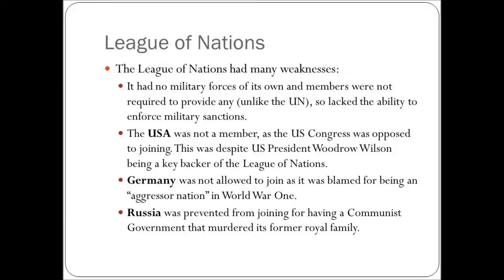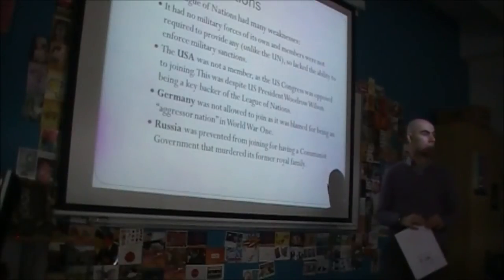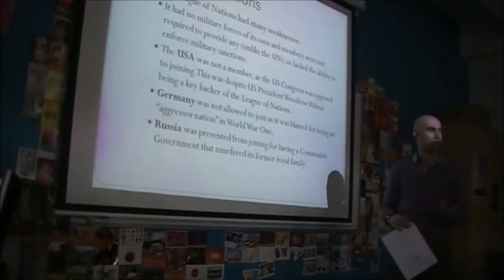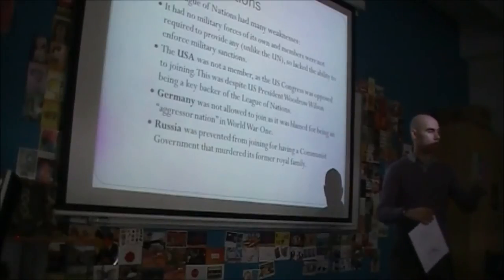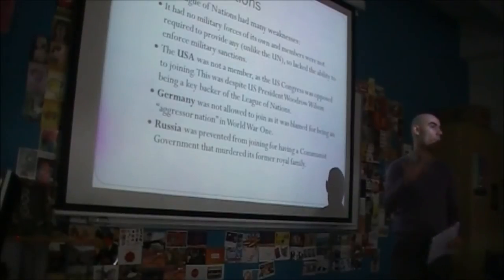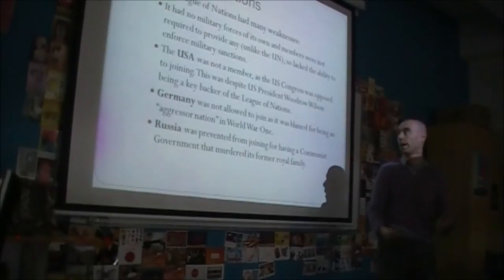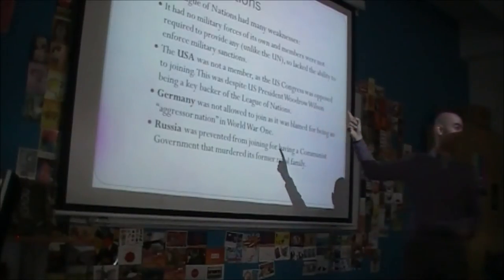One weakness was that the League had no military forces of its own. Now, neither does the UN. But what the UN does have is the requirement for member countries to provide funding or peacekeepers. The League of Nations did not have this. UN peacekeeping forces are actually British, American, Chinese, Cuban, Argentinian, Brazilian, and Australian forces under UN administration — provided by individual nation states. So the League lacked the ability to enforce military sanctions. That's problem number one: it didn't have the authority to fully enforce everything it set out to do.